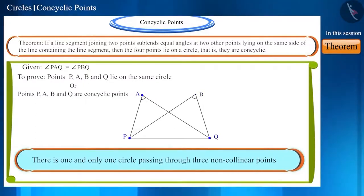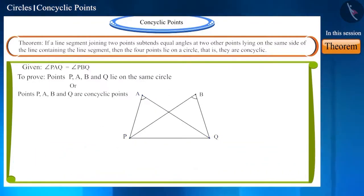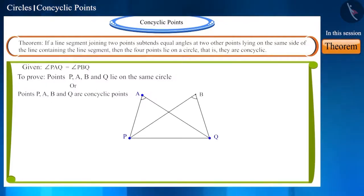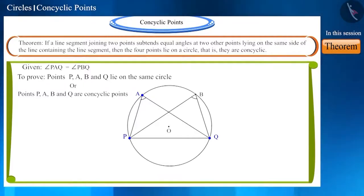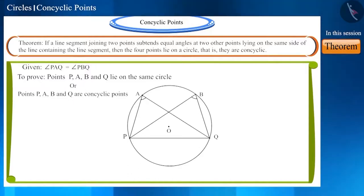We know that there is one and only one circle passing through three non-collinear points. Let's draw a circle passing through the three non-collinear points P, A, and Q. We can see that point B appears to also be situated on that circle, but without proving it we cannot confirm its correctness.